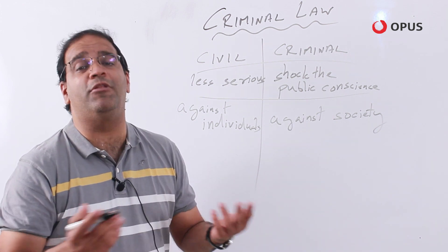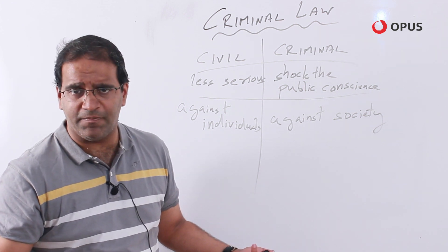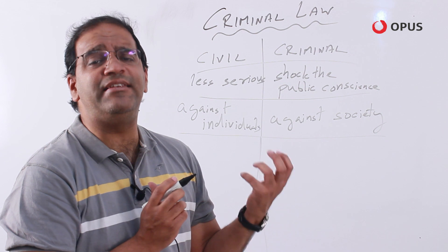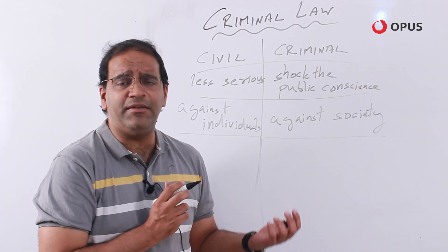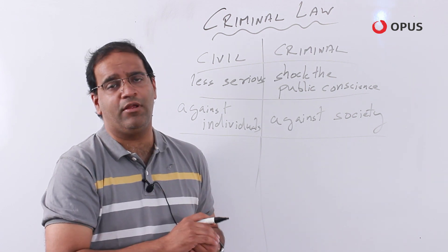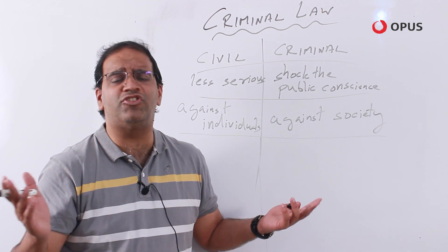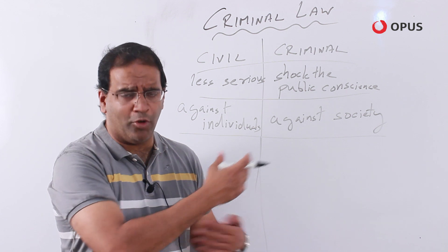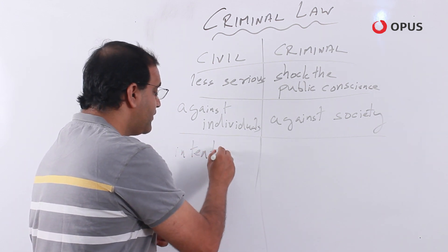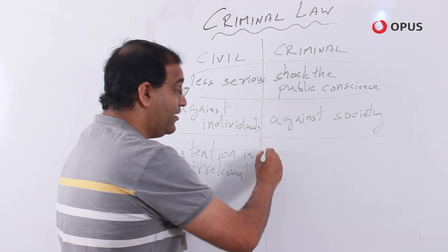Civil wrongs are wrongs between individuals — the rest of the public is not really concerned. A husband and wife having a matrimonial dispute doesn't bother others as such. Another distinguishing feature is the aspect of intention. In order to be found guilty of a criminal wrong, it must be proved in court that the person committed that crime intentionally. As far as civil wrongs are concerned — be it a matrimonial or labour dispute — intention is not relevant at all. By and large, intention is irrelevant in civil wrongs, but typically very relevant in crimes.